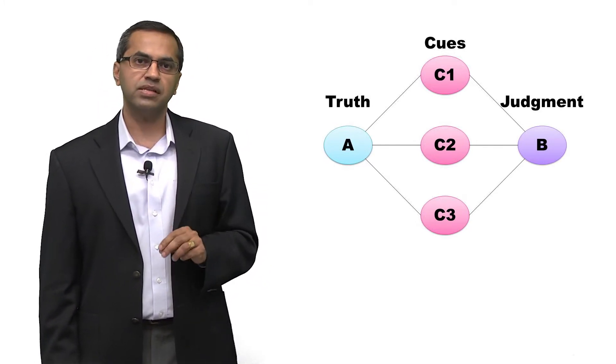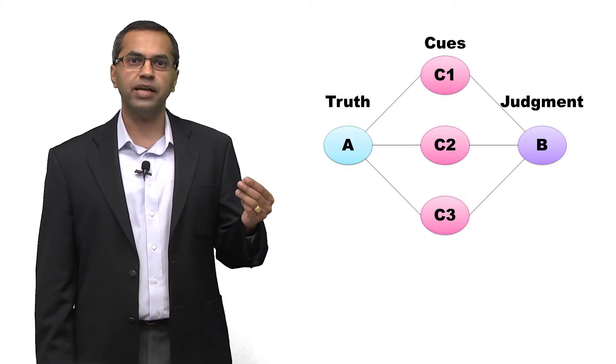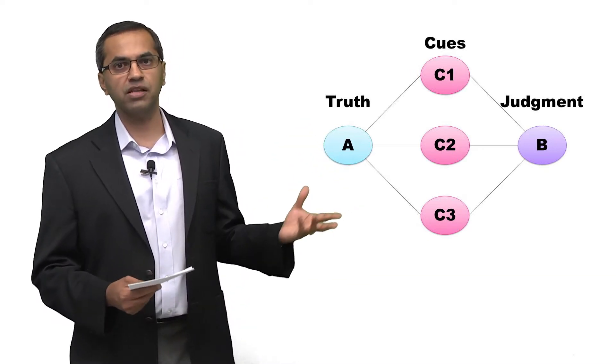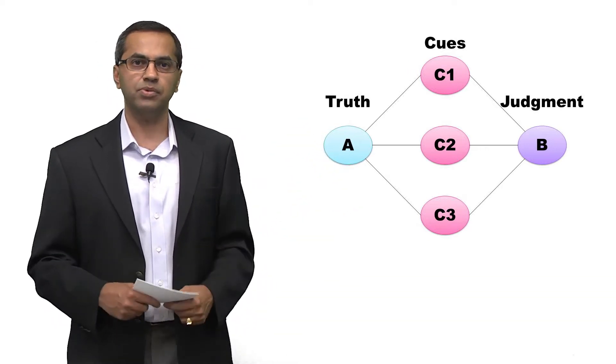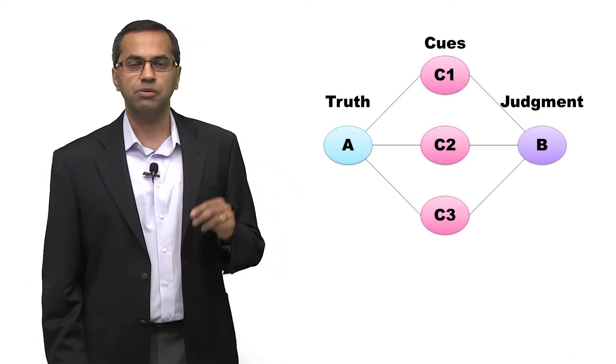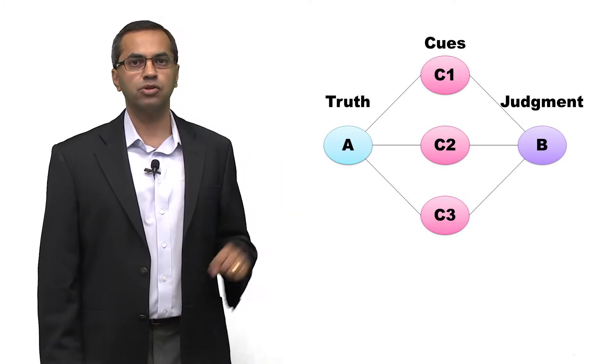The social judgment theory says something very simple. It essentially says that when we try and make judgments about the truth, and again, the truth is something that we don't observe or that will take time to happen, we rely on what are called cues, which are pieces of information in the environment that we believe will predict the truth.